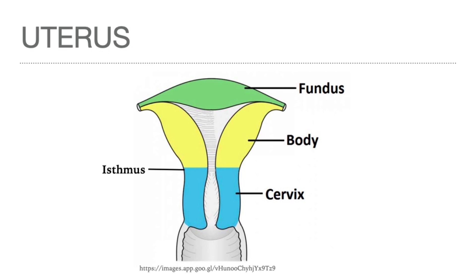The human uterus is pear-shaped with a thick muscular wall. Its rounded upper portion is the fundus, and its wide upper two-thirds is its body or corpus. A narrower portion below this is the isthmus, which separates the body from the lower segment of the uterus called the cervix.